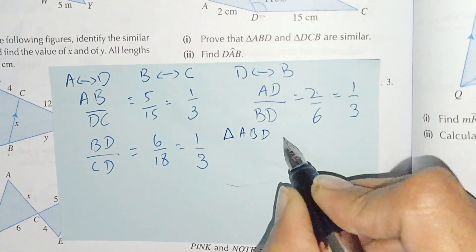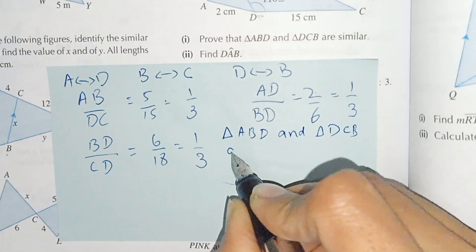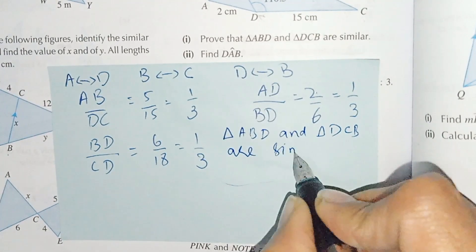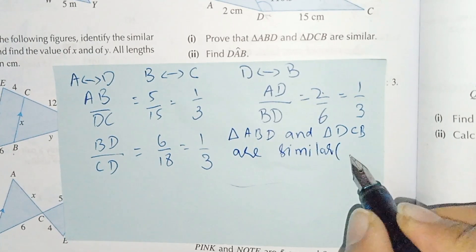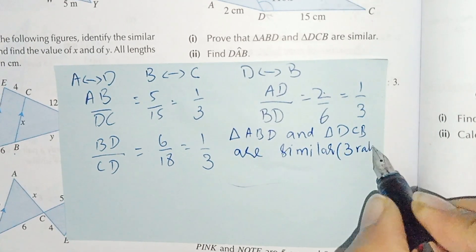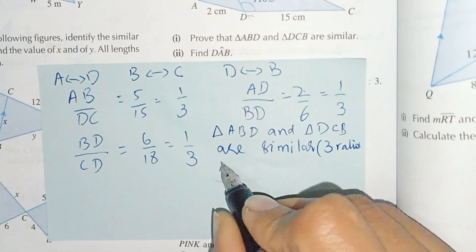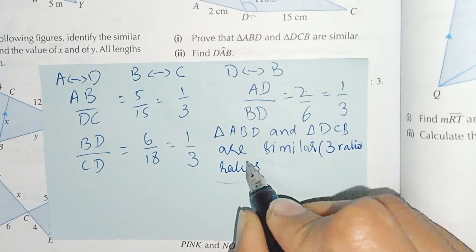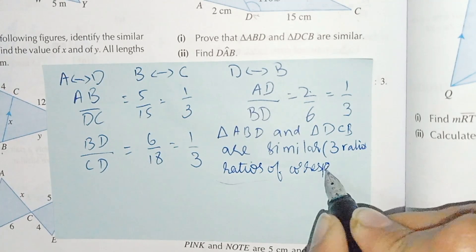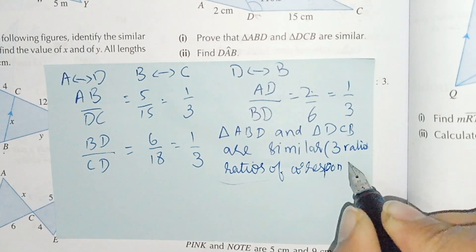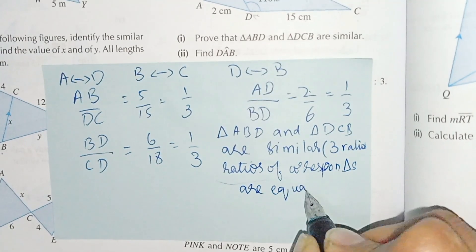Triangle ABD and triangle DCB are similar because the three ratios of the corresponding sides of the triangles are equal.